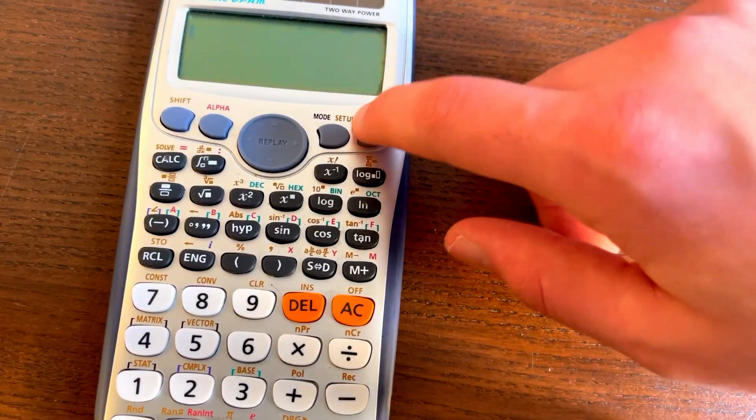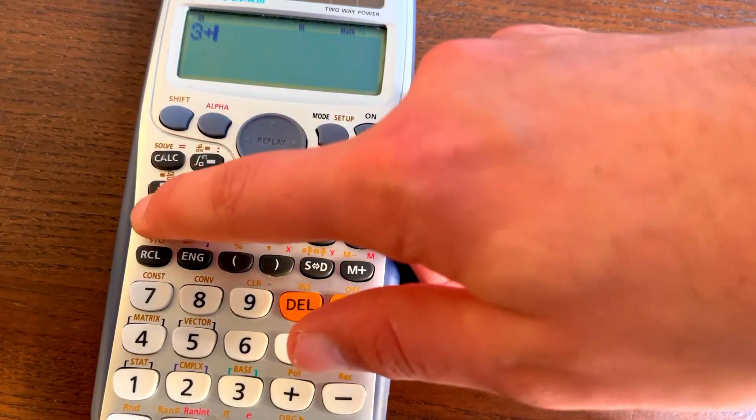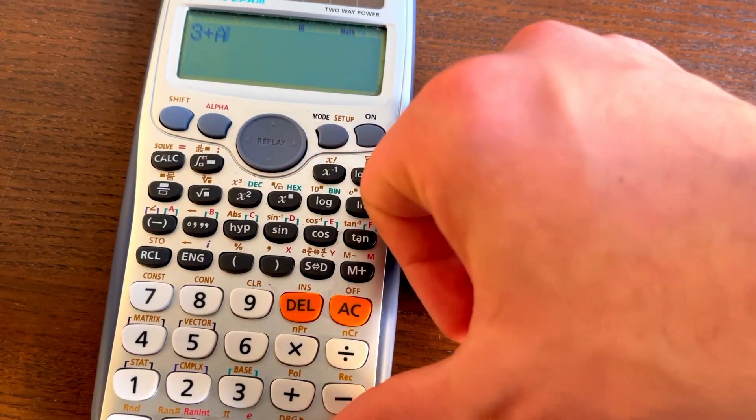If we ever needed to use it, we can do 3 plus alpha A, and this will do 3 plus 622.